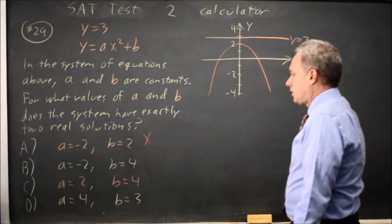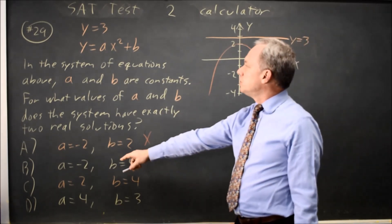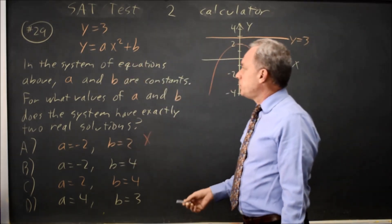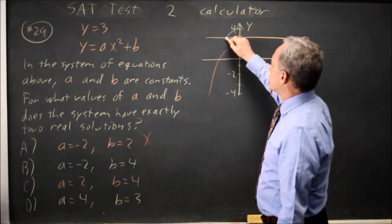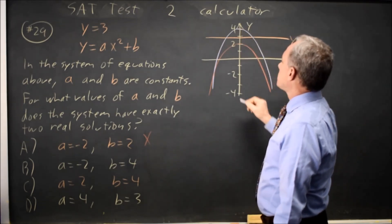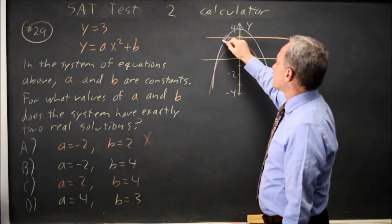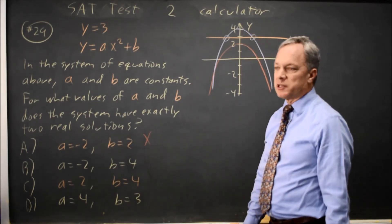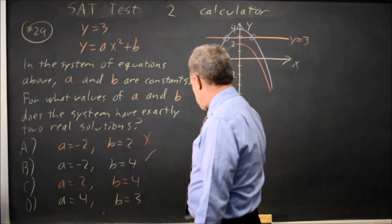Let's try choice B. A equals negative 2 so the parabola opens down again. B equals 4 so the vertex is at positive 4. If you have a parabola with the vertex at 4 opening down, it will cross through Y equals positive 3 twice so that solution works.